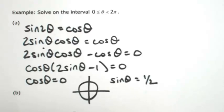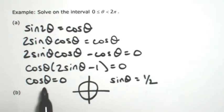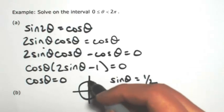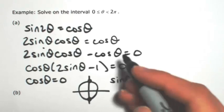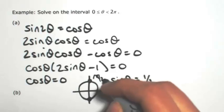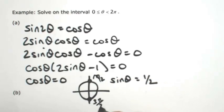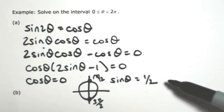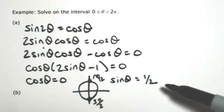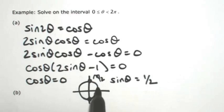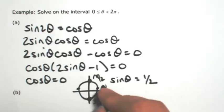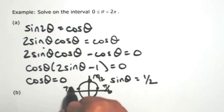So in one revolution of the unit circle, 0 to 2π. For cosθ, I'm looking for where the x coordinate is 0. So that's going to be at the top and the bottom. So π/2 and 3π/2. To find where sinθ is 1/2, where the y coordinate is 1/2. So we have π/6 and 7π/6.